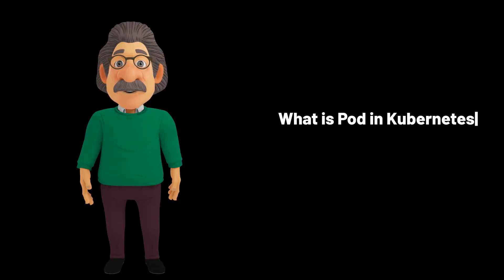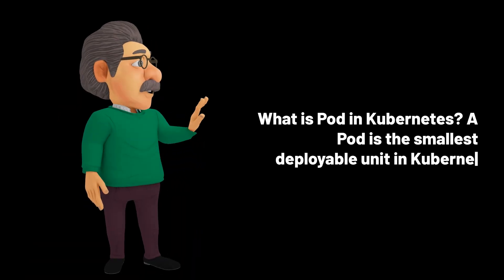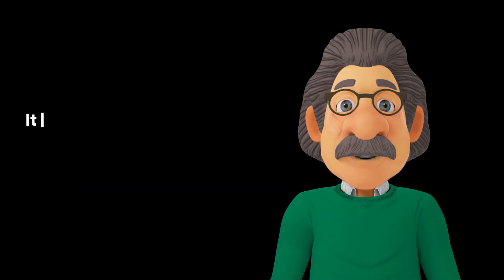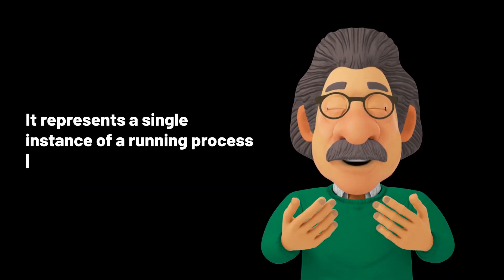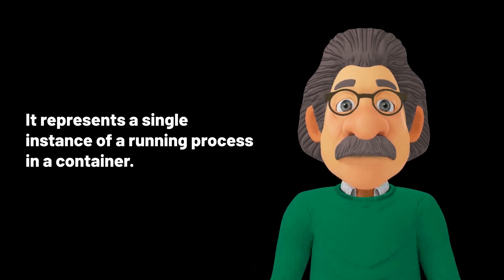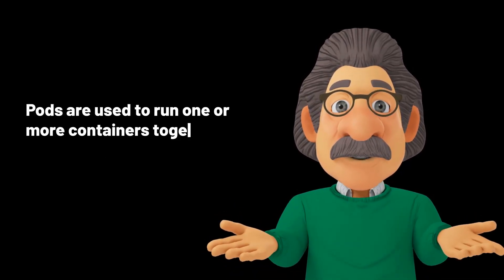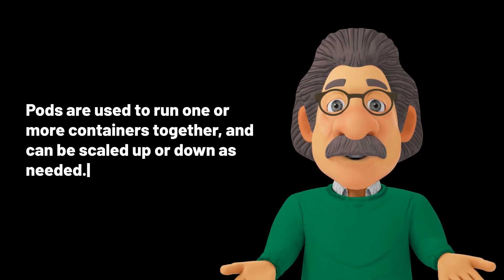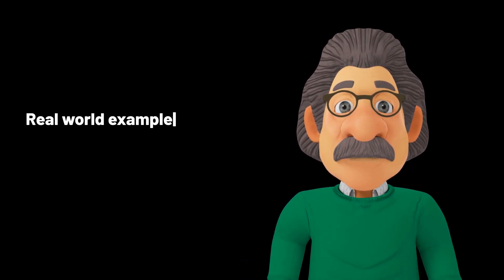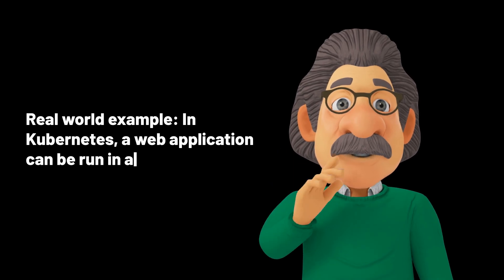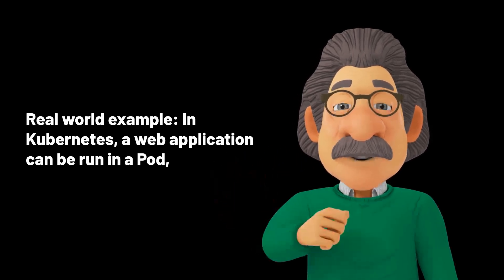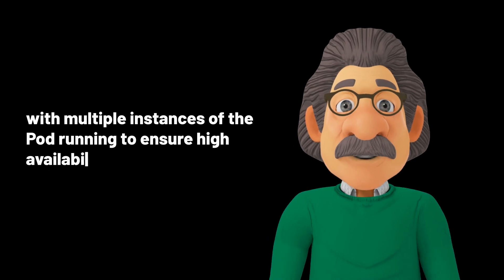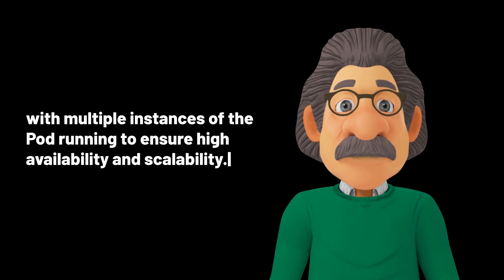What is a pod in Kubernetes? A pod is the smallest deployable unit in Kubernetes. It represents a single instance of a running process in a container. Pods are used to run one or more containers together and can be scaled up or down as needed. Real-world example: in Kubernetes, a web application can be run in a pod, with multiple instances of the pod running to ensure high availability and scalability.